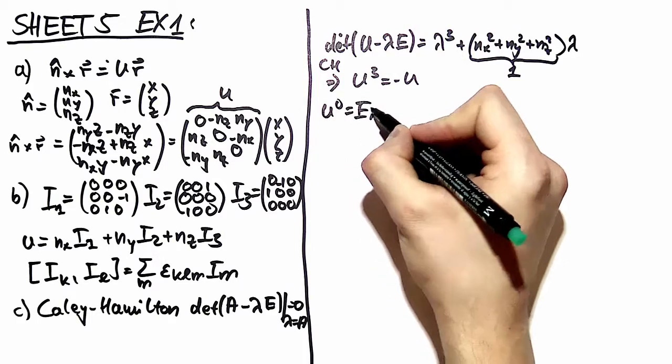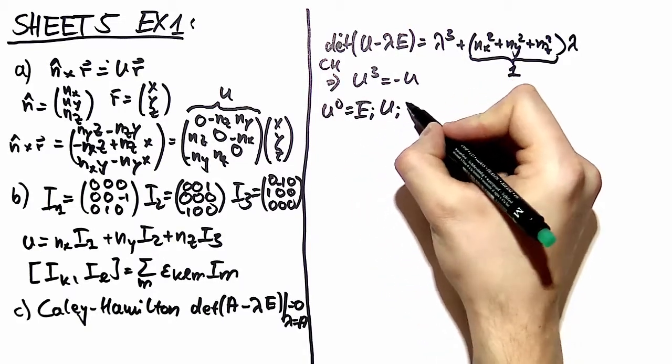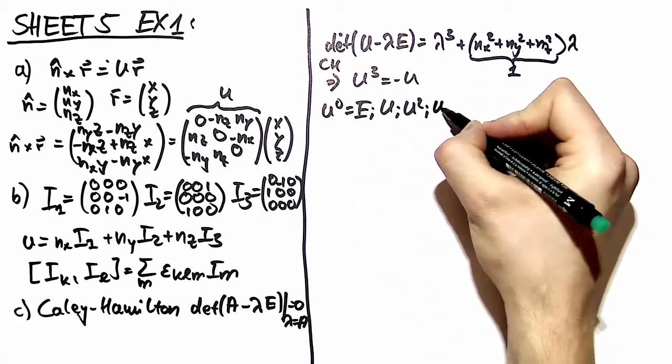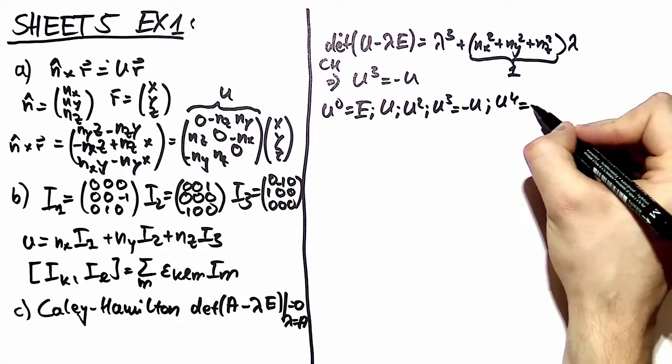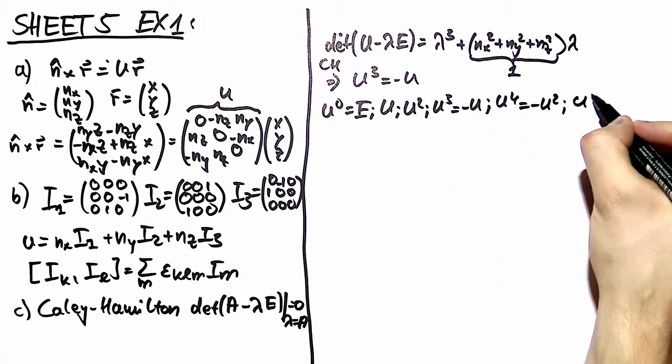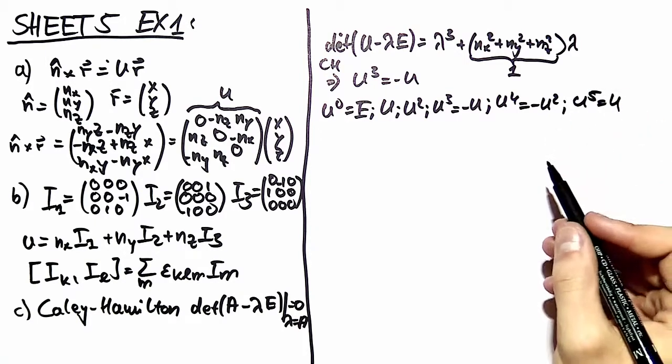We look at that. u to the zero is equal to the identity. Then you have u and u squared. But as soon as you hit u to the third, this is equal to minus u. And u to the fourth is minus u squared. And u to the fifth is u again. And then it repeats.